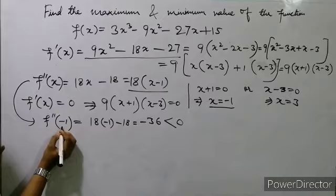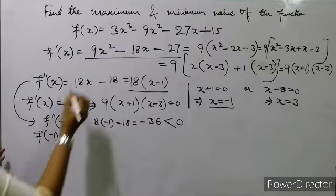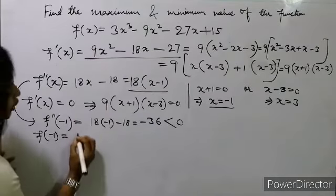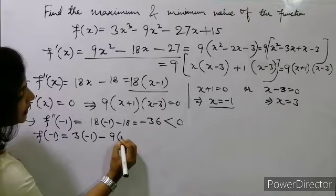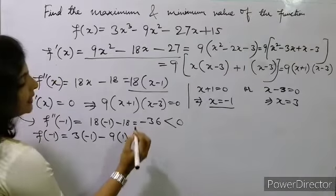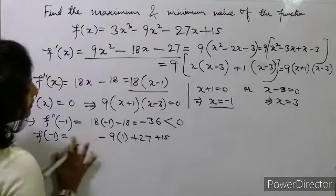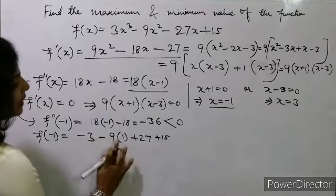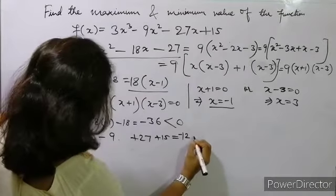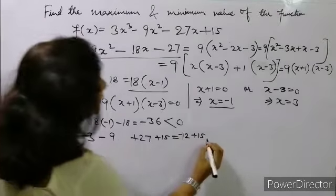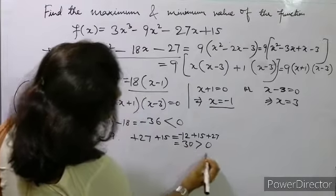Now we put x = -1 in f(x). f(-1) = 3×(-1)³ - 9×(-1)² - 27×(-1) + 15 = 3×(-1) - 9×1 + 27 + 15 = -3 - 9 + 27 + 15 = 30. So f(-1) = 30, which is greater than 0.